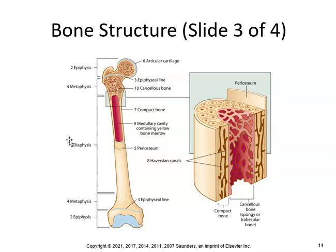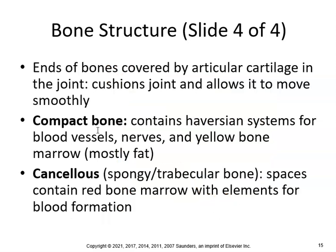The ends of bones are covered by articular cartilage within the joint, which cushions and allows smooth movement. You're only born with a finite amount of articular cartilage — you can't make more, so once it's gone, that's it. Compact bone contains Haversian systems for blood vessels, nerves, and yellow marrow, which is mostly fat.